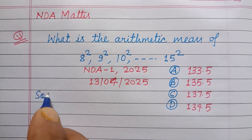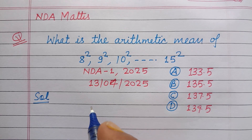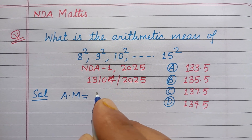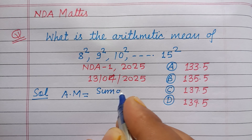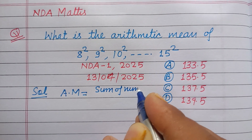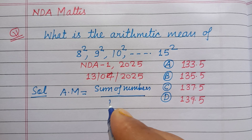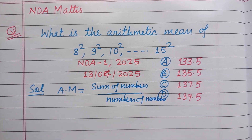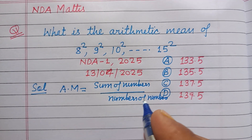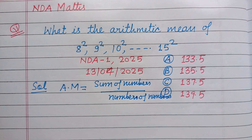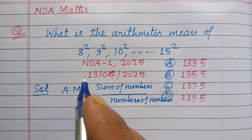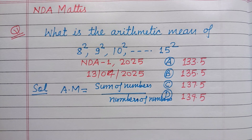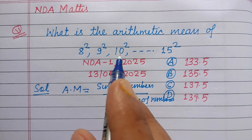The question is simple. You know that the arithmetic mean (AM) of numbers is the sum of numbers over the count of numbers. Here the numbers are given as squares of consecutive integers: 8 square, 9 square, 10 square, up to 15 square.